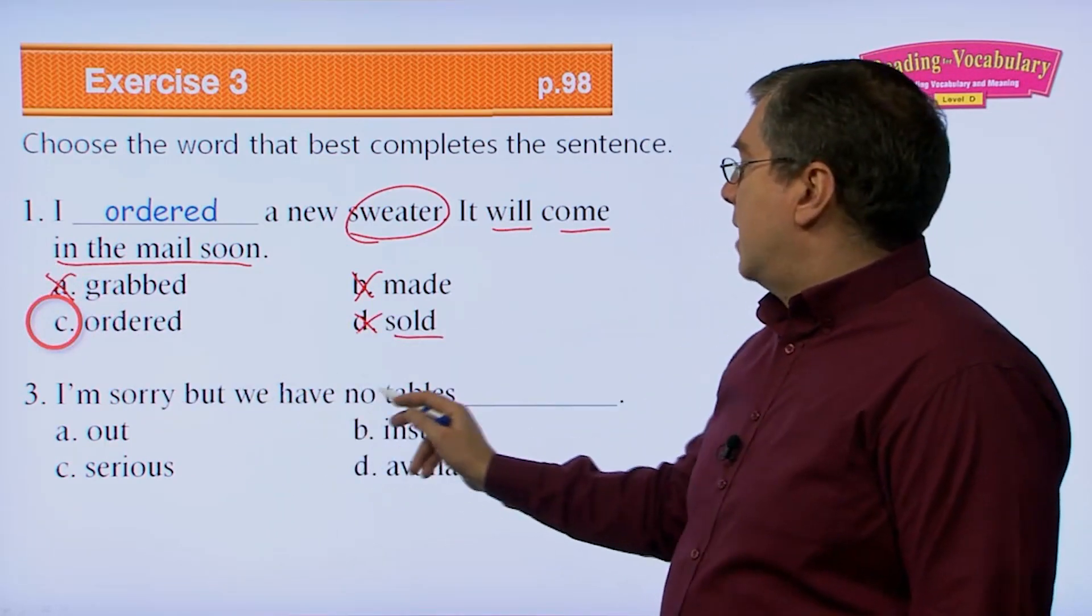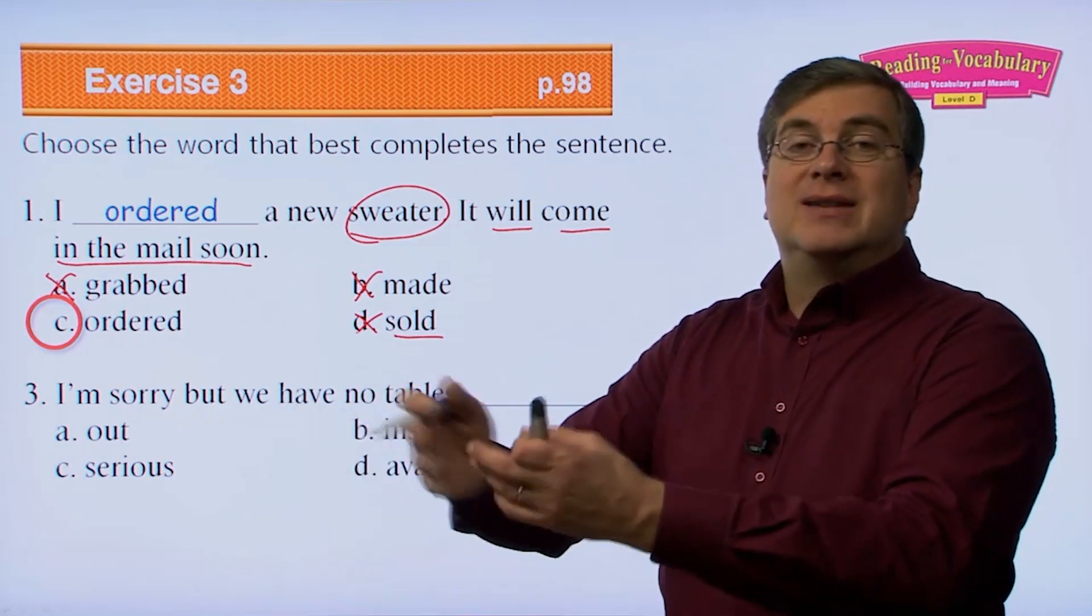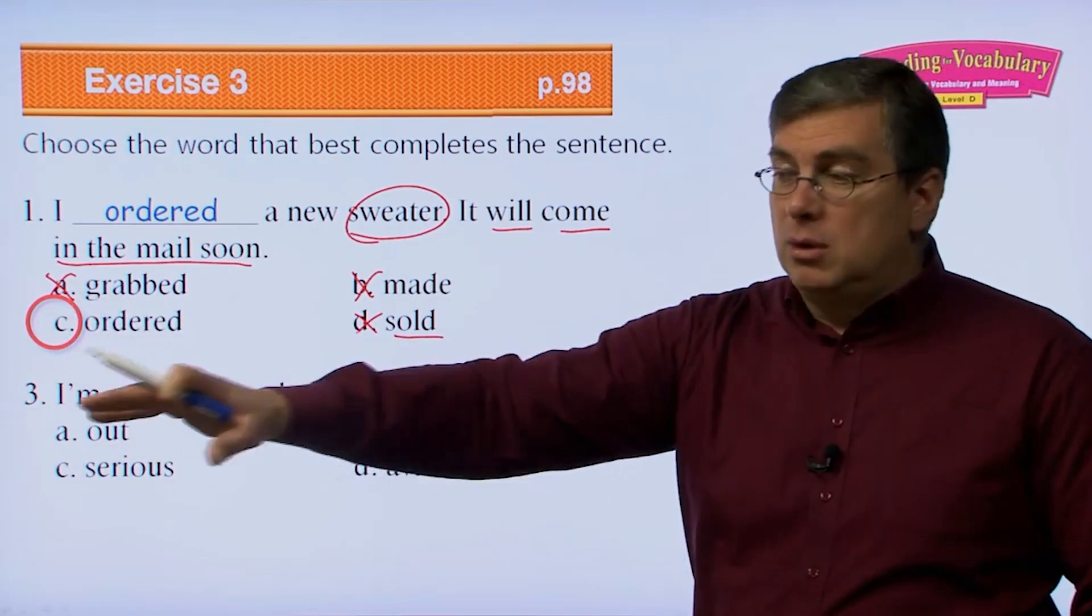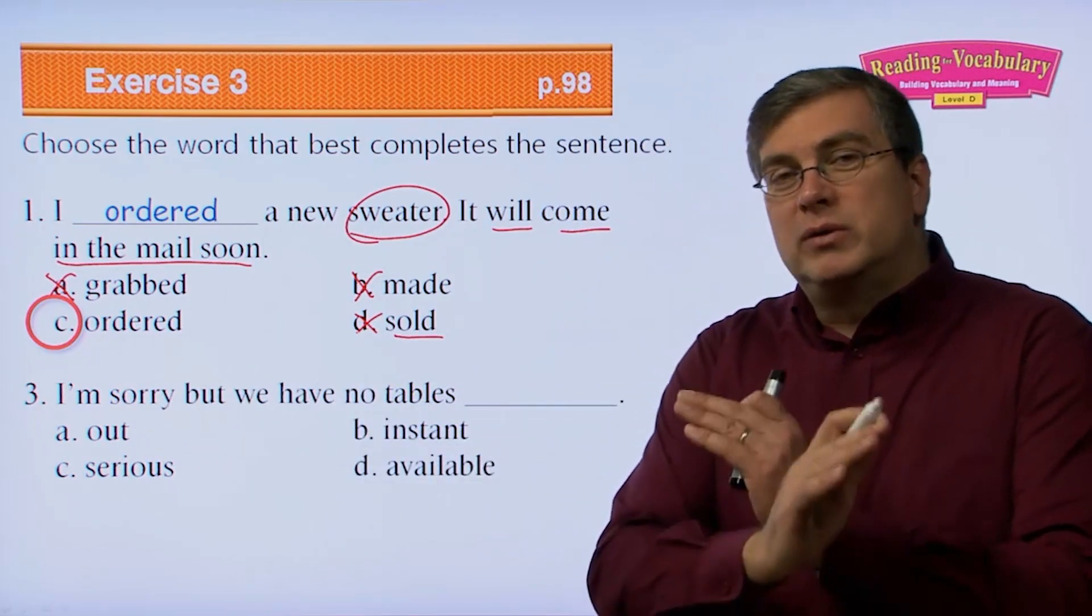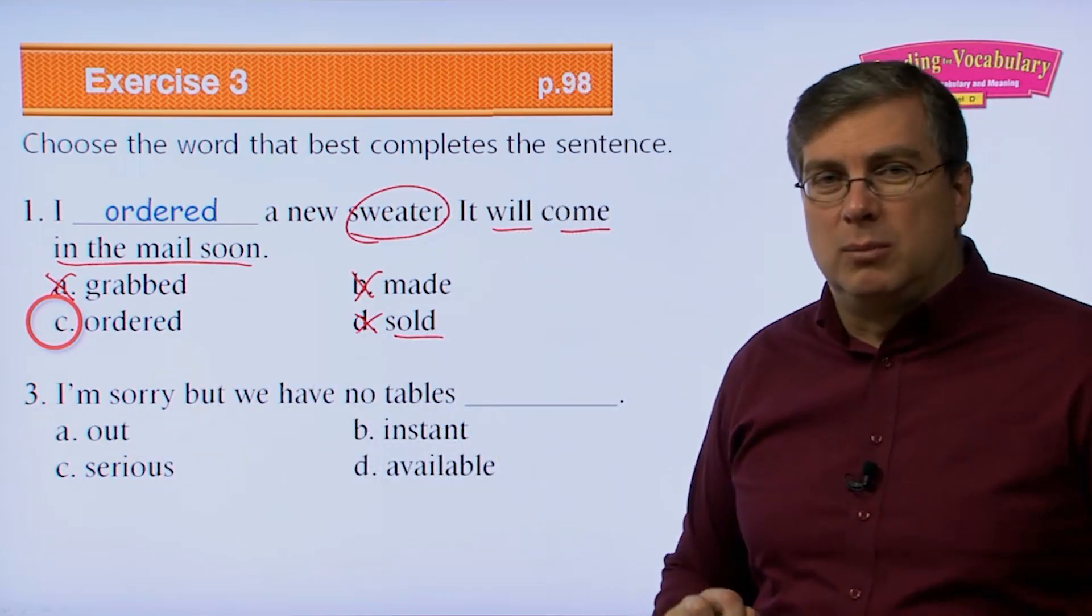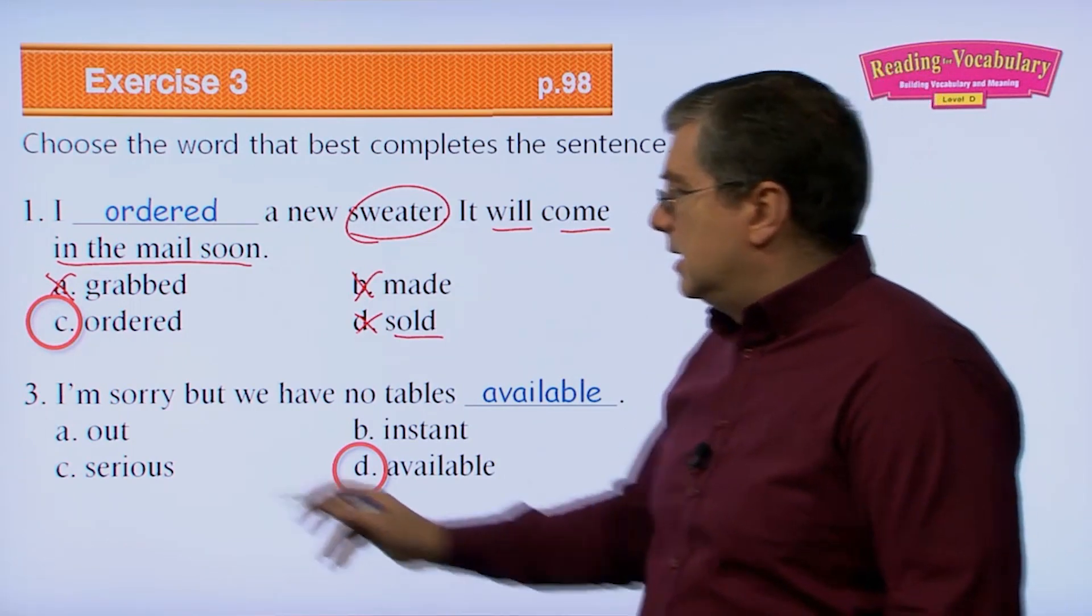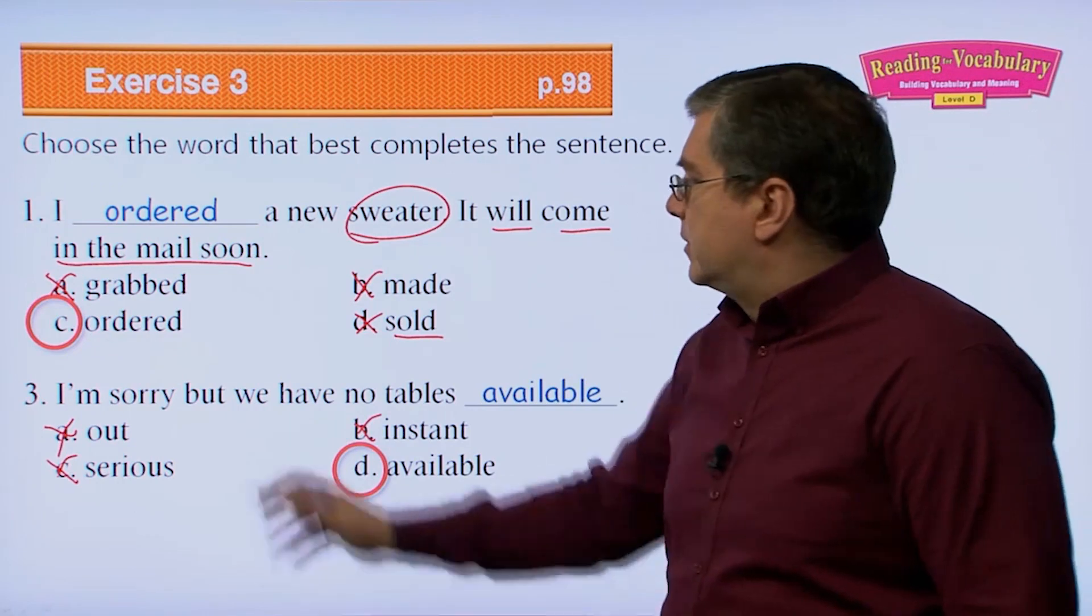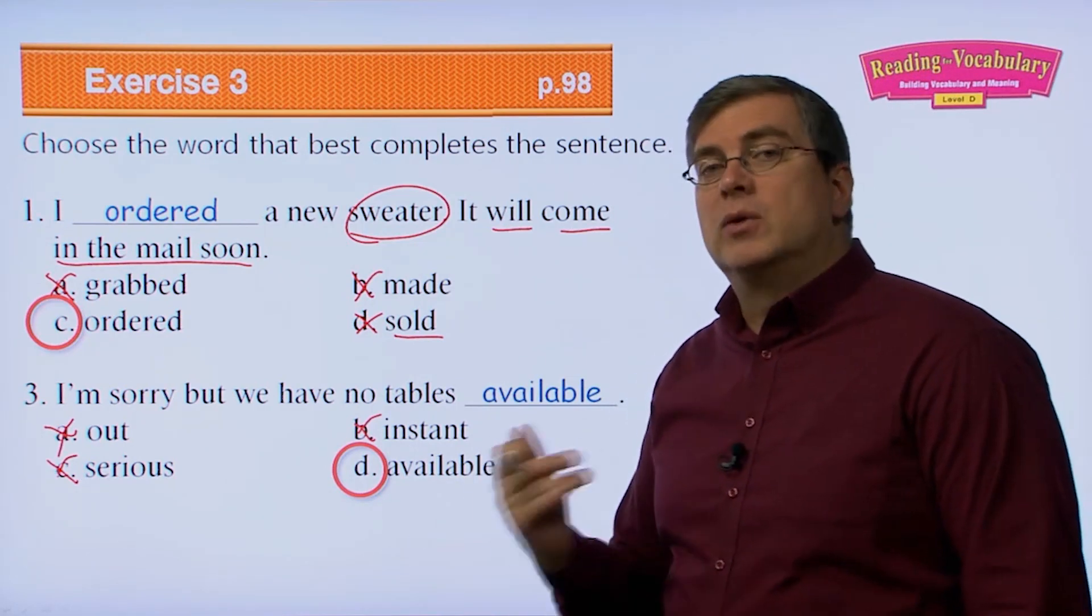Number three, I'm sorry, but we have no tables beep. Remember when we talked about this word, I use the example of the chair. If there is a chair that is empty, that you can use it, it is what? Same thing about a table. You go into a restaurant and there is an empty table. Nobody is sitting there. Then that table is what? But if you go in the restaurant, the waiter says, I'm sorry, but we have no tables for your use. No tables out, no tables instant, no tables serious, or no tables available. Well, right away we can see available. I'm sorry, but we have no tables available. No tables are ready for your use. Not out, not instant. That doesn't make sense. And not, we have no tables that are serious. That's just silly. So I'm sorry, but we have no tables available. This one we see right away. No tables that are ready for your use. No tables available.